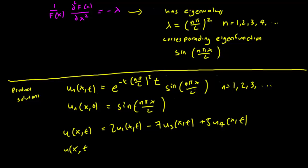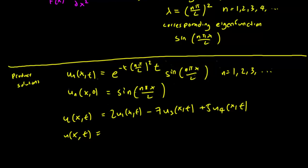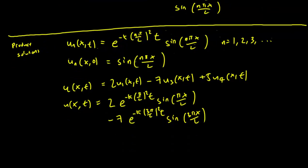And written out fully, our solution is going to be of the form 2e^(-k(π/L)²t)sin(πx/L) - 7e^(-k(3π/L)²t)sin(3πx/L) + 5e^(-k(4π/L)²t)sin(4πx/L).